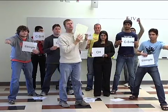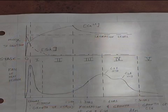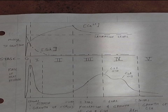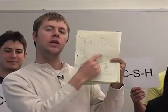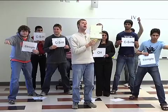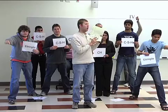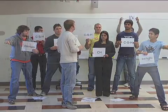Our reaction becomes diffusion controlled. It starts to get harder and harder and harder for these water molecules to get in. Our rate of reaction starts to go down, lower and lower and lower. And it gets to a point where we get to stage five. We still get CSH formation during this time — we're still densifying our microstructure. Stage five begins.